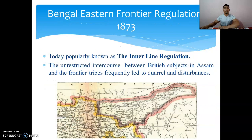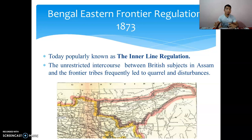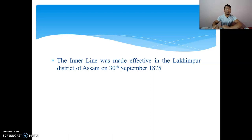The Bengal Eastern Frontier Regulation 1873, which we know today as the Inner Line Regulation. This regulation was necessary because the plains people and the tribes used to have unrestricted business relations, which caused law and order problems. For smooth administration, the Inner Line was passed, effective in the Lakhimpur district of Assam on 30th September 1875.